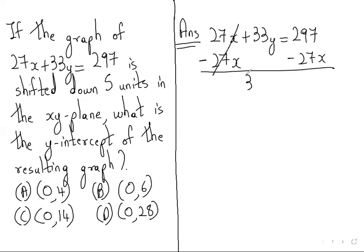27x minus 27x cancel, we will get 33y equals minus 27x. Then here there is no sign, so we will write plus 297.